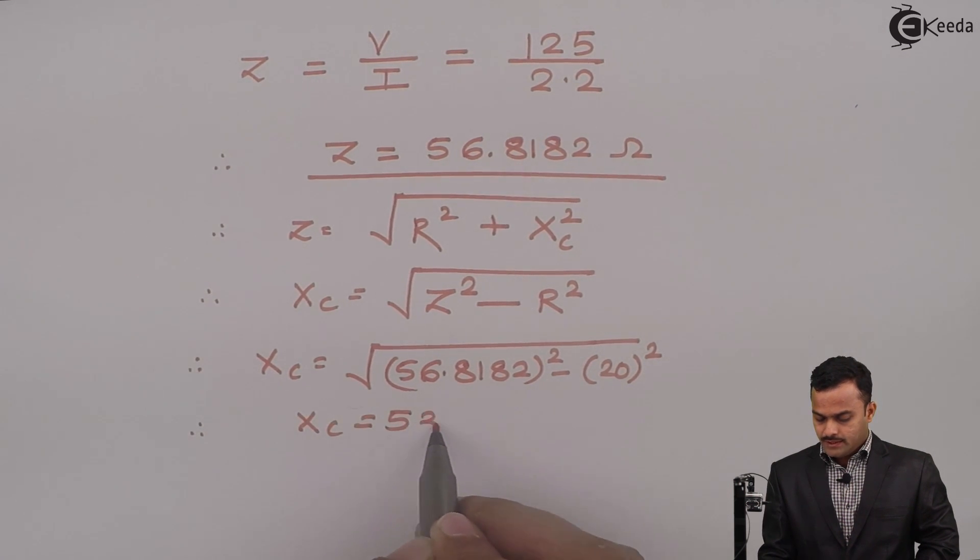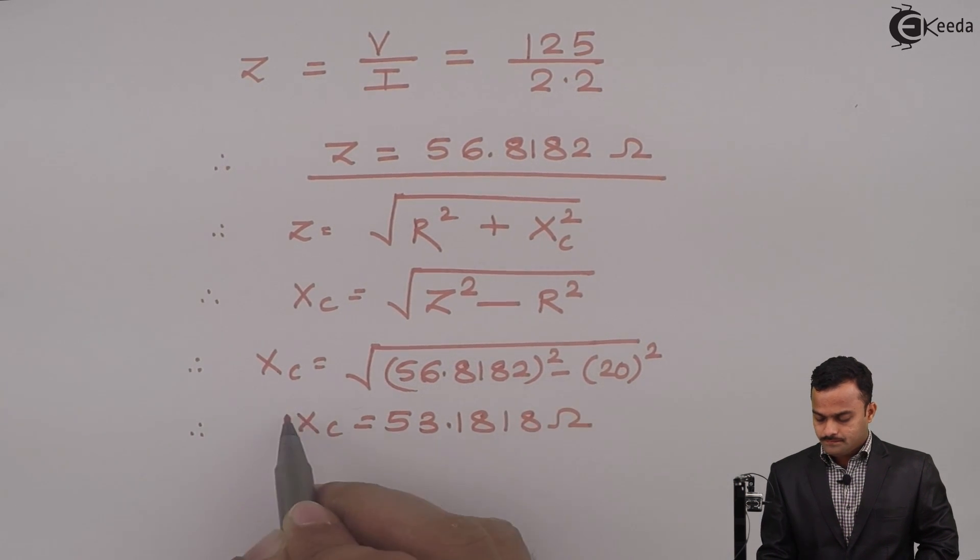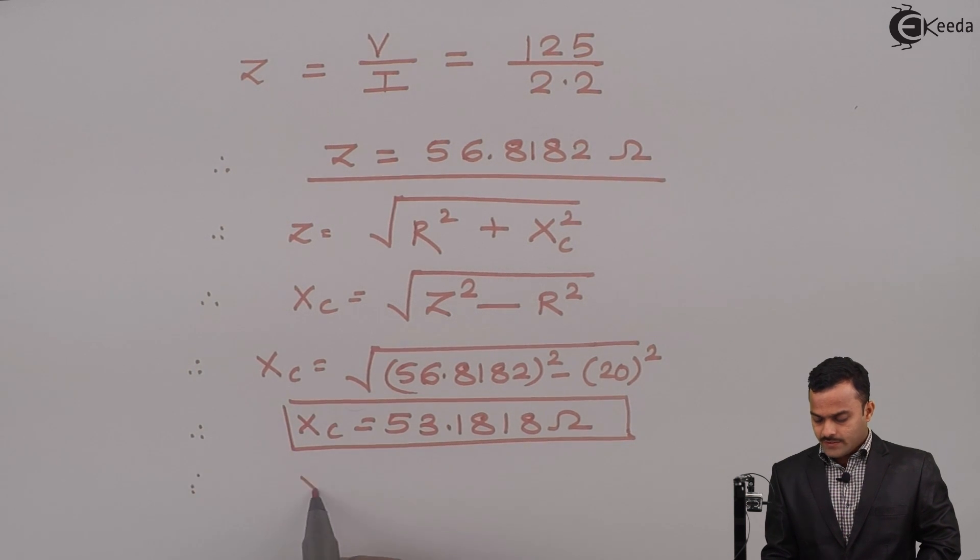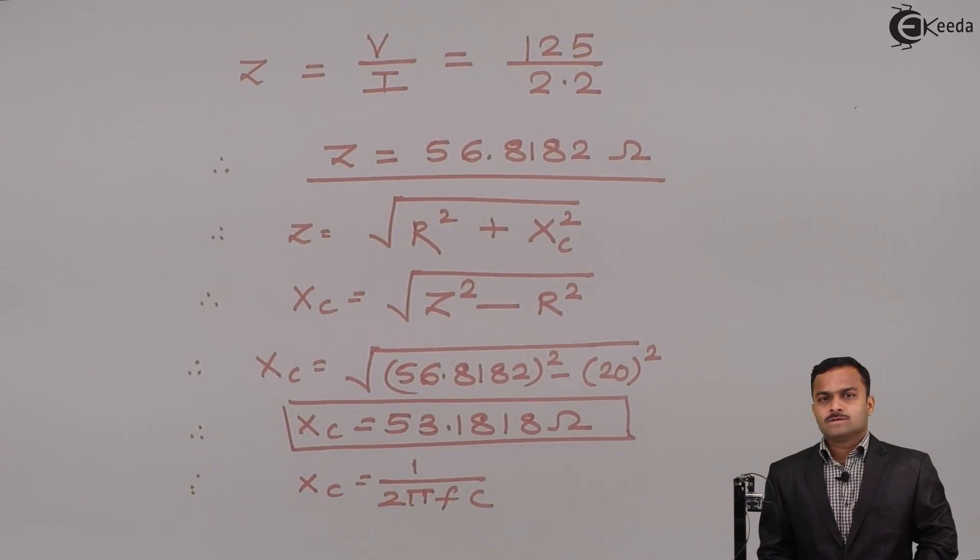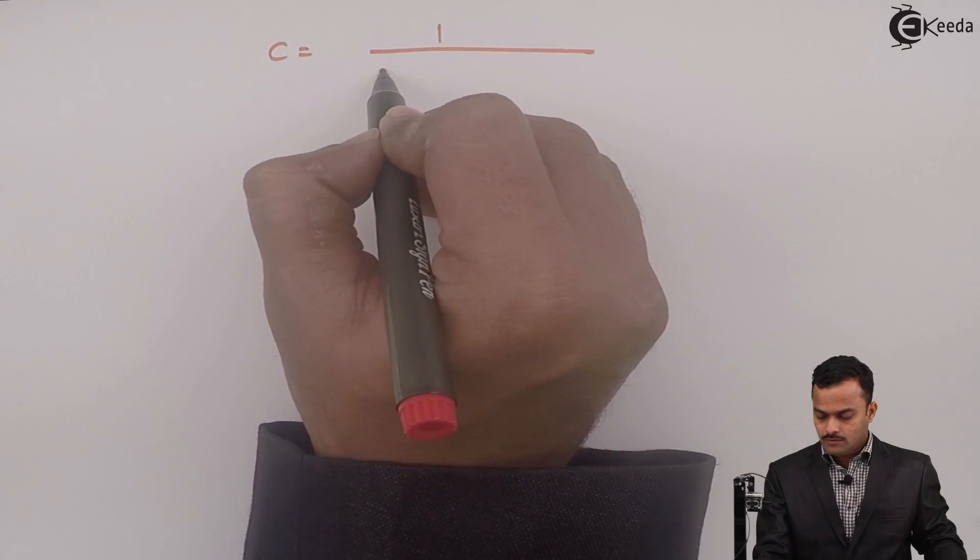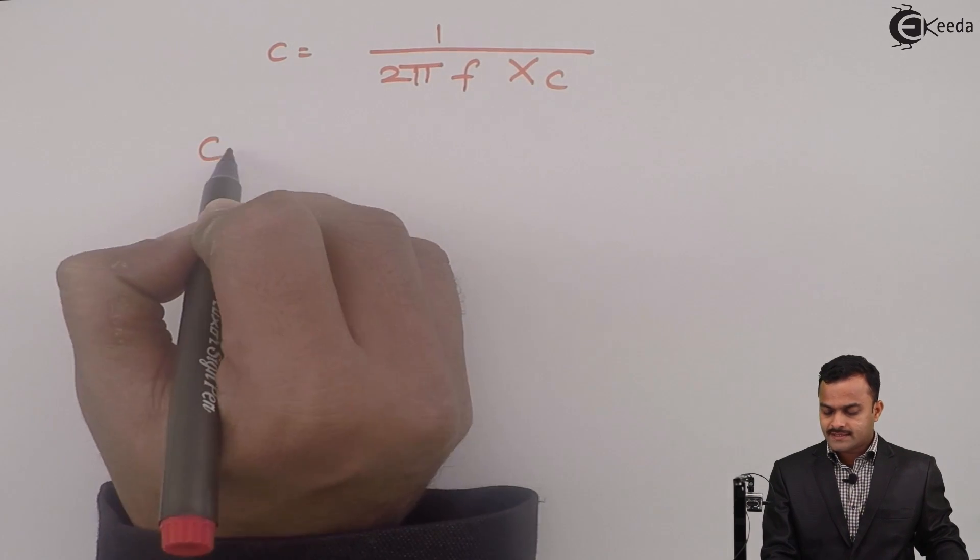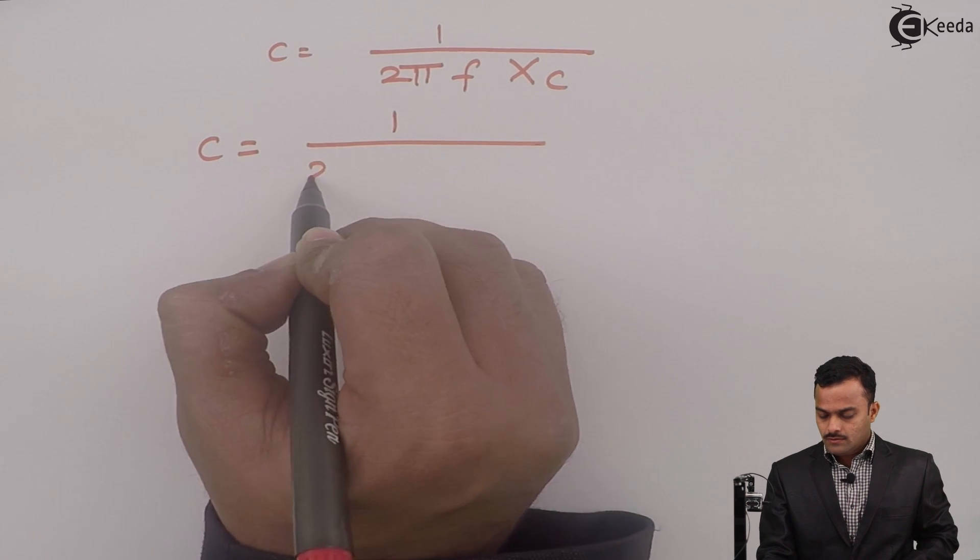Now XC is given as 1 upon 2 pi F C. Unknown is C, so C equal to 1 upon 2 pi F into XC. So let's substitute all the values given: 1 upon 2 pi.